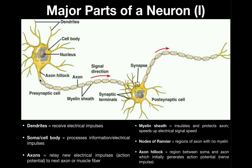On the axon, you'll see these little insulating regions — these are called myelin sheaths. A myelin sheath is a region of the axon that's covered in a structure that both insulates and protects the axon. As we'll see later, it actually speeds up the electrical signal. There are multiple myelin sheaths along the axon, and for most axons there's going to be some degree of myelination.